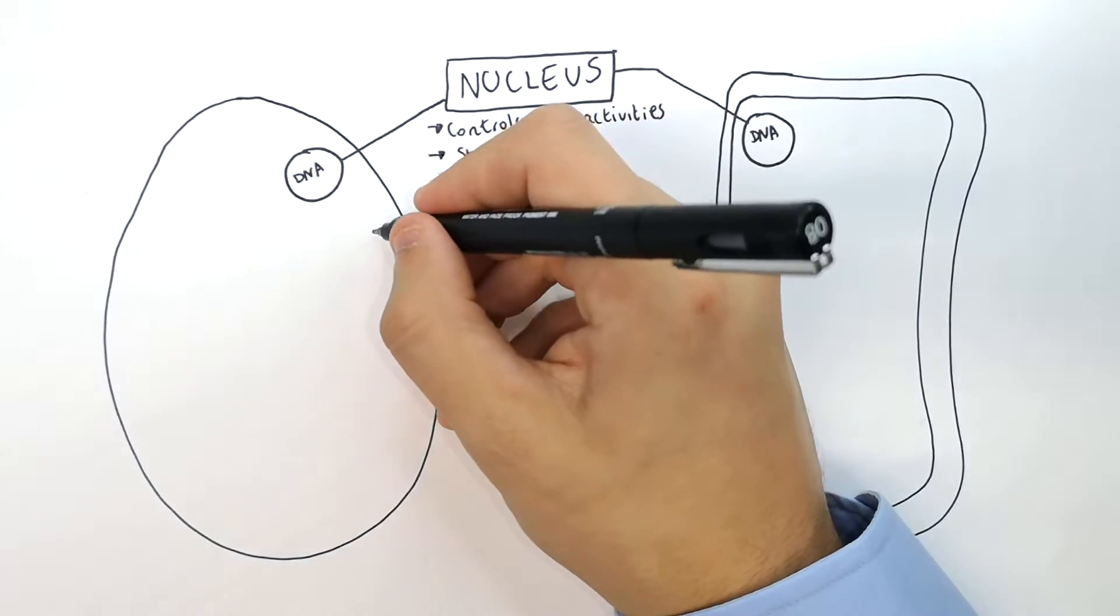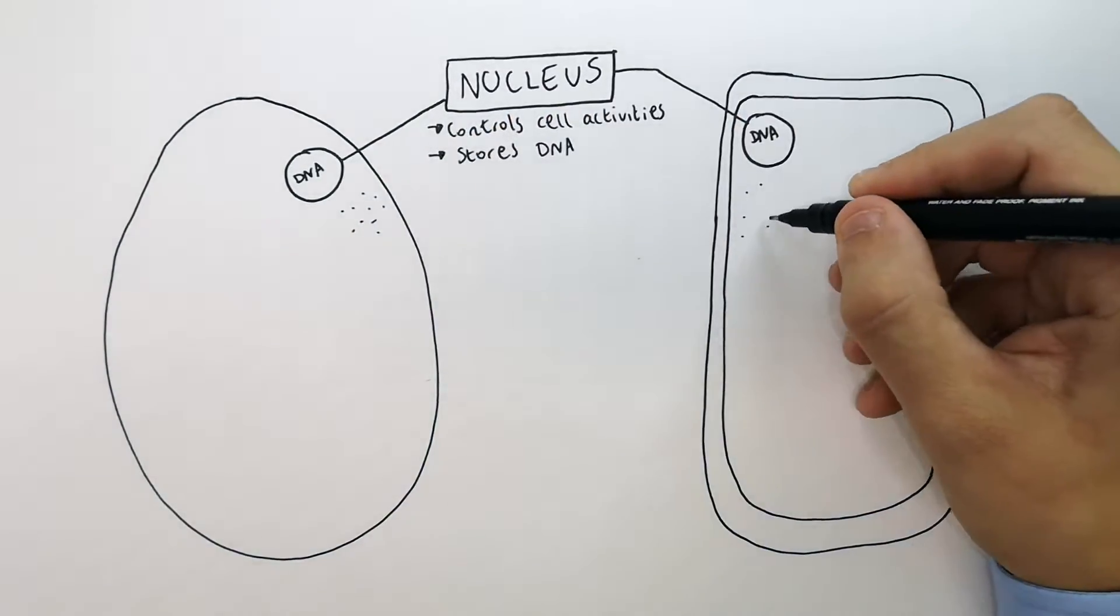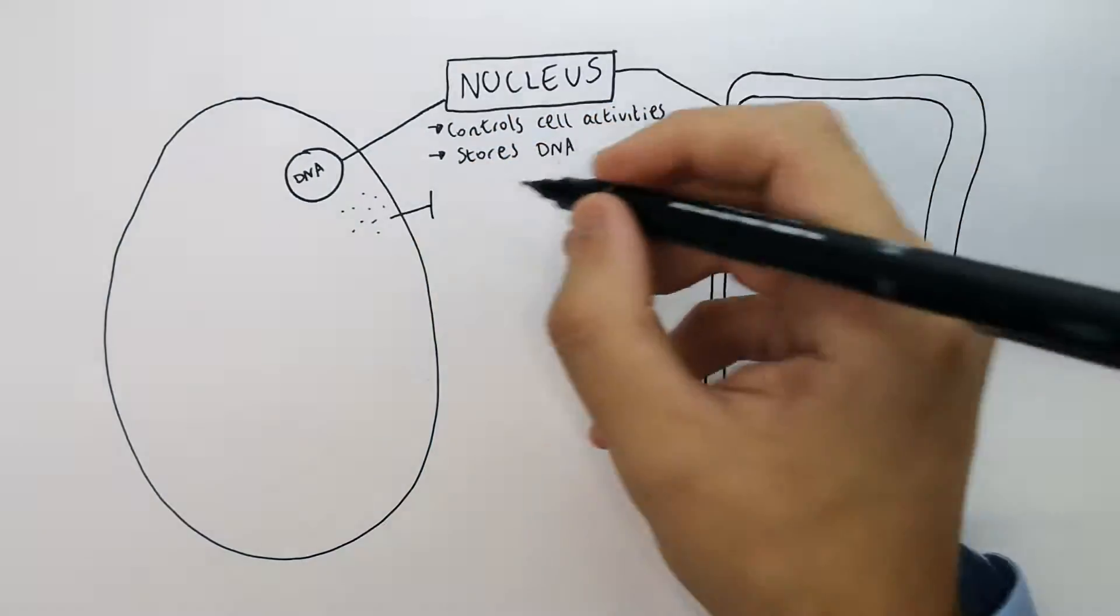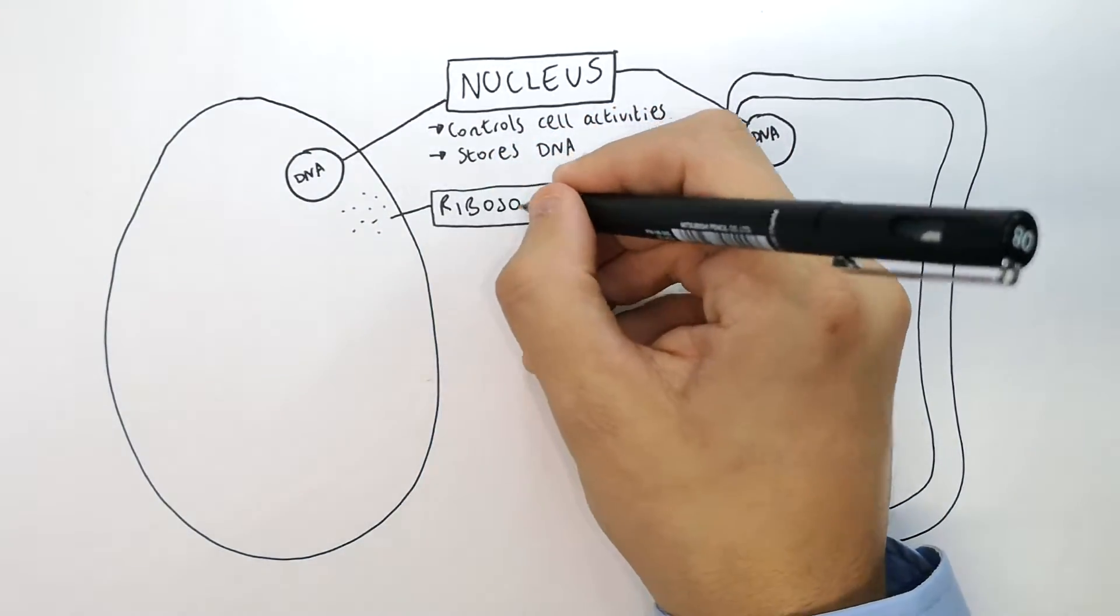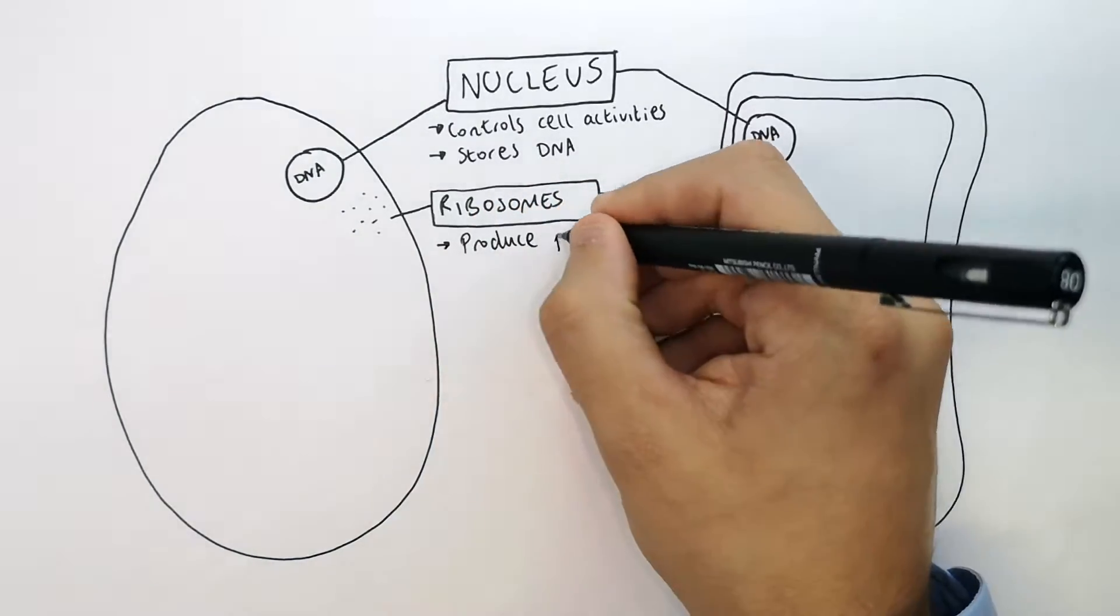The next organelle I'm going to talk about are ribosomes. Ribosomes are in both the animal cell and the plant cell. Ribosomes are organelles that produce protein.